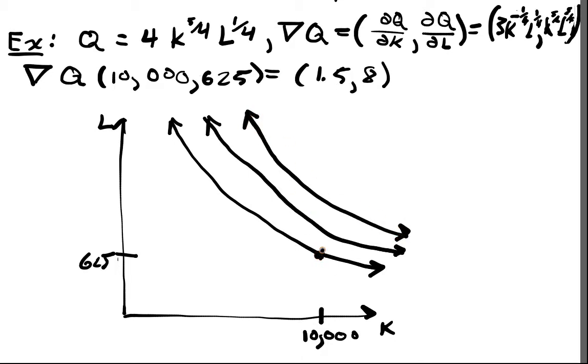And this is going to point exactly. So if I look at this, these are ever-increasing fixed Q quantities. And if I fix this, this tells me exactly how to move up this hill in the fastest way. So this tells me if I want to increase my production the fastest possible way, I want to simultaneously increase K and L in this proportion. So I want to increase K by 1.5 units and L by 8 units in order to increase this the fastest possible way at this point.